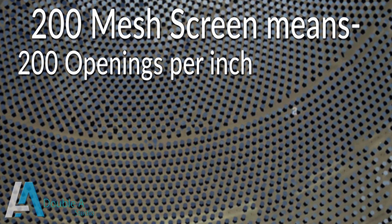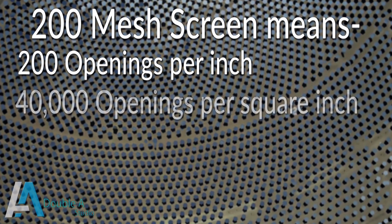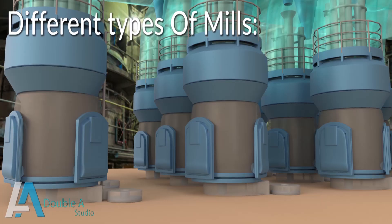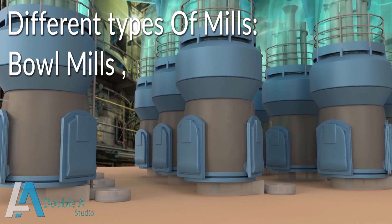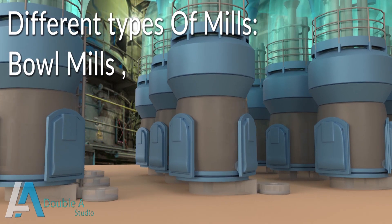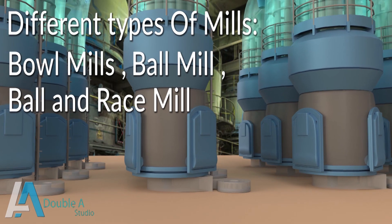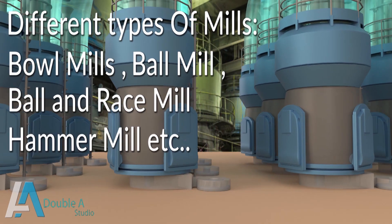For screening of the correct size of pulverized coal, it passes through a 200 mesh screen, which indicates 200 openings per linear inch — that is 40,000 openings per square inch. Thus the size of coal particles comes to be around 74 microns. There are different types of mills: bowl mill, ball mill, ball and race mill, and hammer mill.